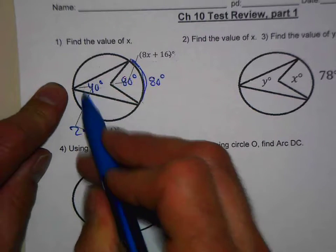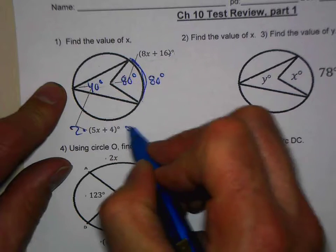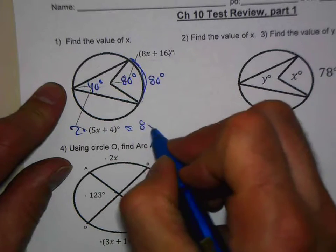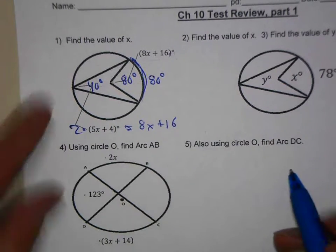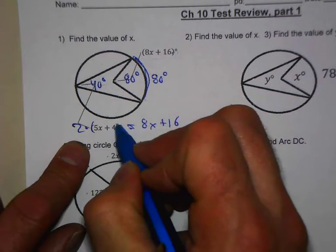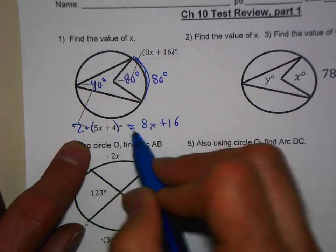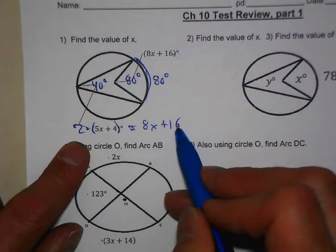So it's two times 5x plus 4 equals 8x plus 16. And of course you would then distribute your two inside the parentheses and then bring all the constants to one side, all the variables to the other side.